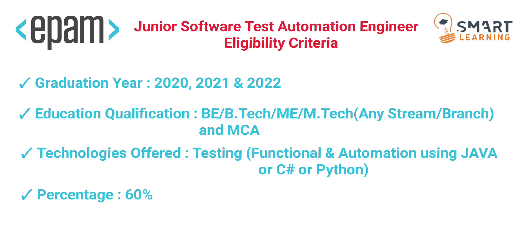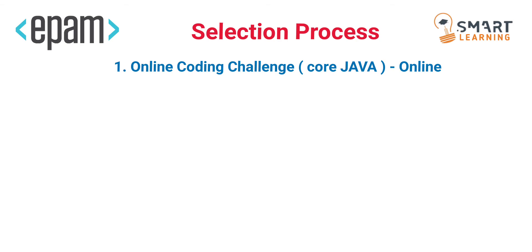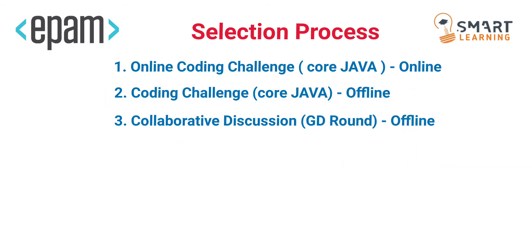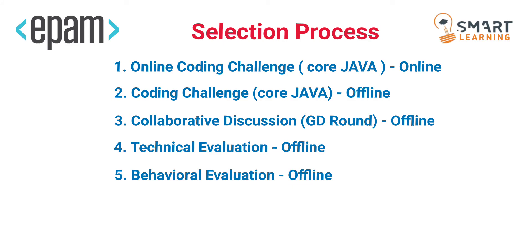The selection process is the same for both roles. The first round is an online coding challenge based on Core Java, conducted online. The second round is a coding challenge also based on Core Java, but conducted offline. The third round is a collaborative discussion, which is a group discussion, also offline. The fourth round is a technical discussion, also offline. The fifth round is a behavioral evaluation, face-to-face in offline mode.